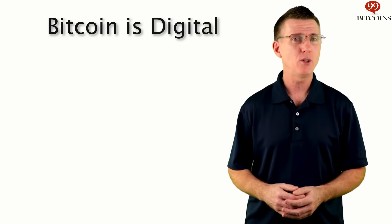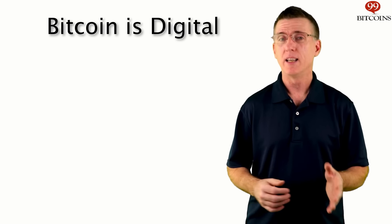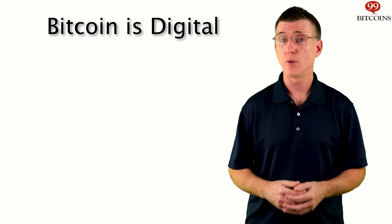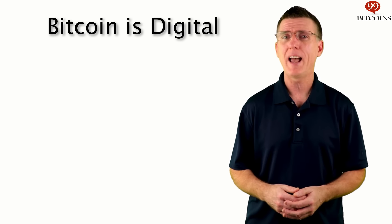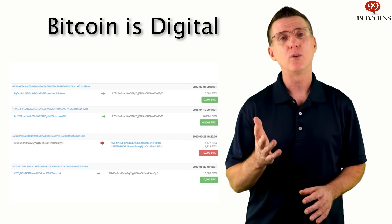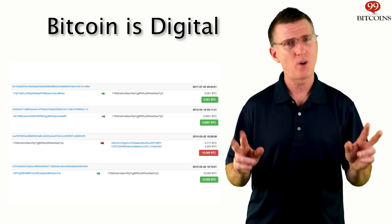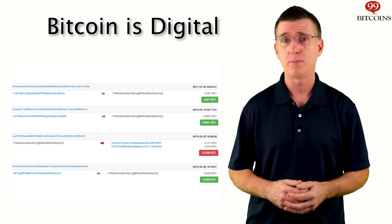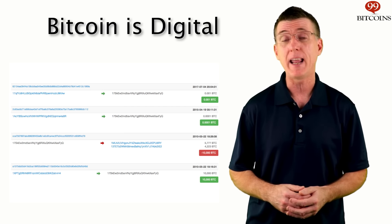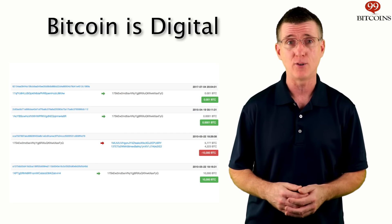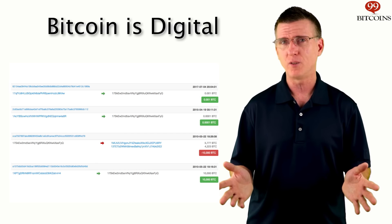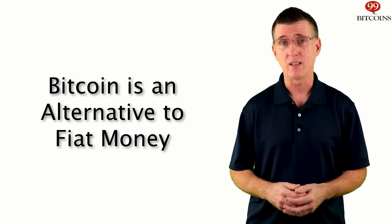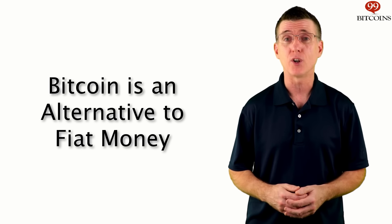Like most money today, Bitcoin is also digital. This means there's nothing physical that you can touch — there are no actual coins, only rows of transactions and balances. When you own Bitcoin, it means that you own the right to access a specific Bitcoin address record in the ledger and send funds from it to a different address. So what does all of this mean? Why is Bitcoin such big news? Well, for the first time since digital money came into existence, we now have an alternative to the current system.